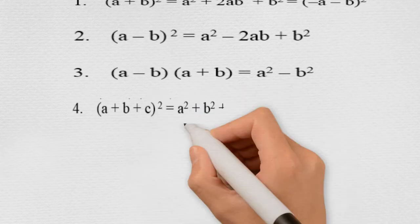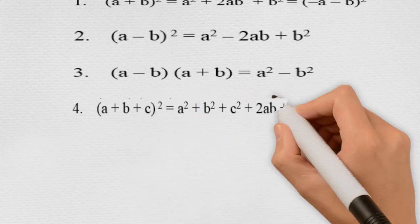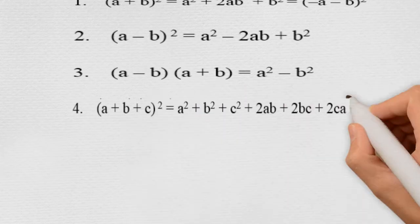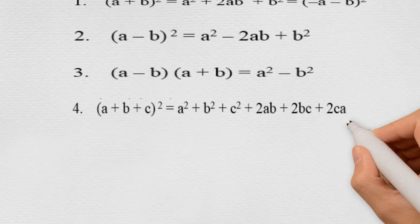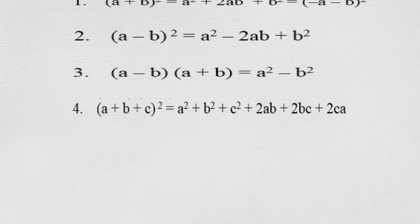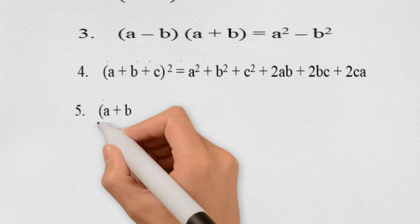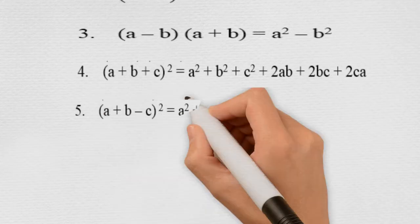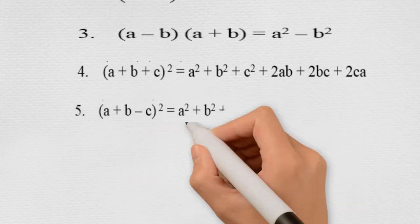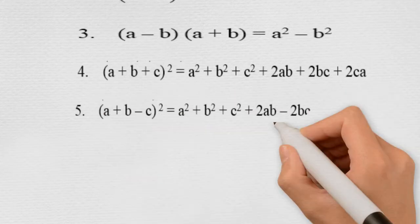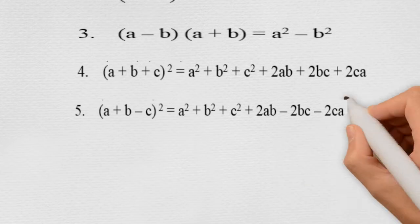The fourth identity is (a + b + c) whole square, which is equal to a square plus b square plus c square plus 2ab plus 2bc plus 2ca.